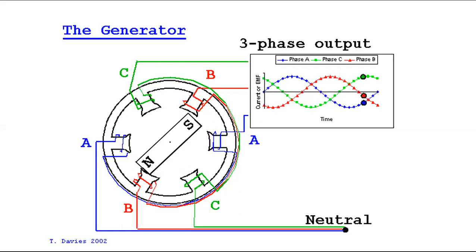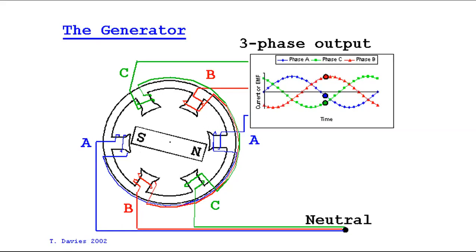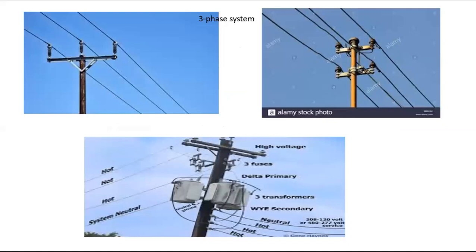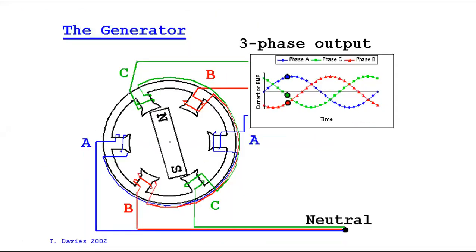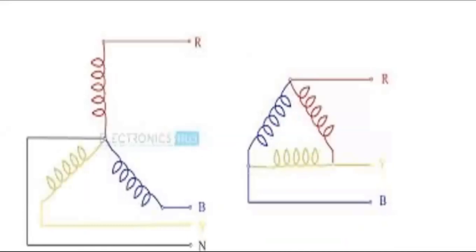The three-phase transmission line - how do we represent it? If you see in the outskirt region you have a three-wire system, and where houses are present you see a three-phase four-wire system. This three-phase system can be represented by star or delta connections.